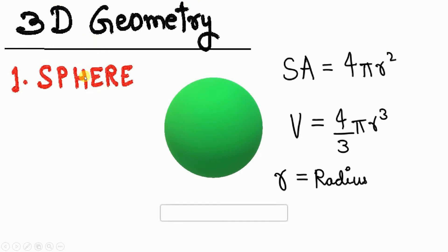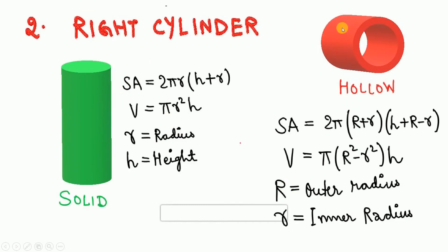Moving to three-dimensional geometry, the first figure is the sphere. Surface area = 4πr² and volume = (4/3)πr³, where r is the radius. Next is the right cylinder — shown in solid and hollow forms. For a solid cylinder: surface area = 2πr(h + r) and volume = πr²h. For a hollow cylinder with outer radius R and inner radius r: surface area = 2π(R + r)(h + R − r) and volume = π(R² − r²)h.